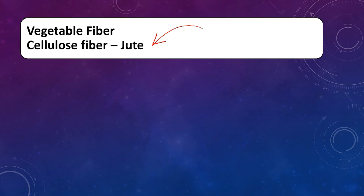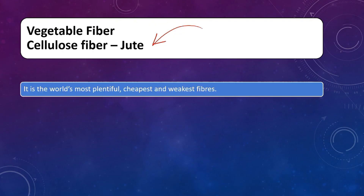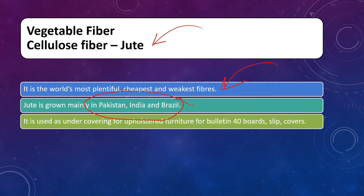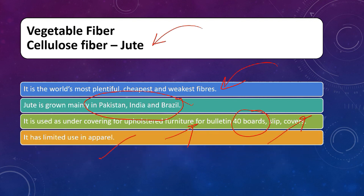The next natural cellulose-based vegetable fiber is jute. As you already know, India is one of the leading producers of jute — it is the world's most plentiful and cheapest fiber. Jute is mainly produced in India, Pakistan, and Brazil. Generally, jute is not used in apparel. It is used for bulletin boards, party boards, furniture, covers, and similar items — it has limited use in apparel.